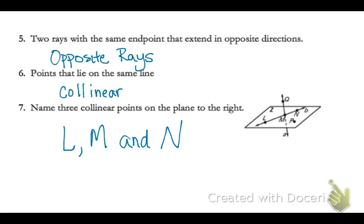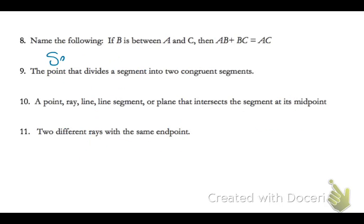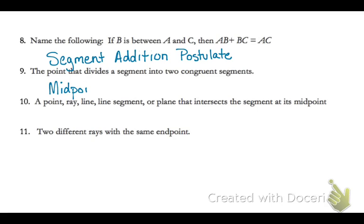Your other options are Z and P. You can't use Z because Z is naming the plane. Q is off of the plane, and P is not on a line with any other two points. Two parts of a segment equal the whole segment — that's the segment addition postulate. Points that divide into two congruent segments is the midpoint.